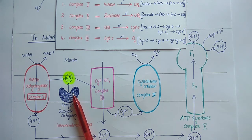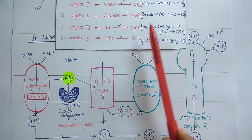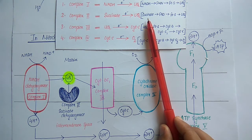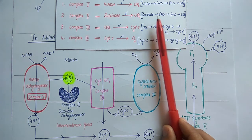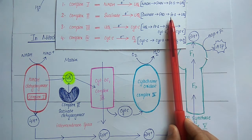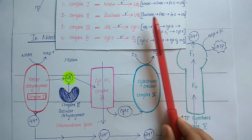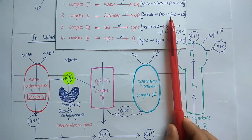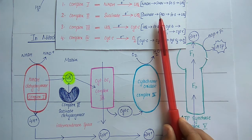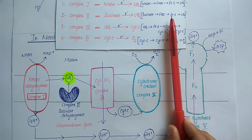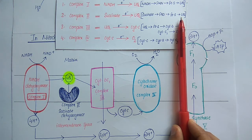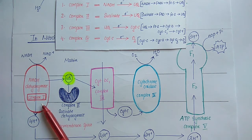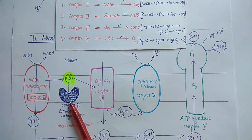Complex 2 is otherwise called succinate dehydrogenase. Its electron carrier cofactors include FAD and FES. Complex 2 transfers electrons from succinate to ubiquinone through FAD and FES — succinate transfers electrons to FAD, then to FES, and finally to ubiquinone. Both complex 1 and complex 2 therefore help transfer electrons to ubiquinone.